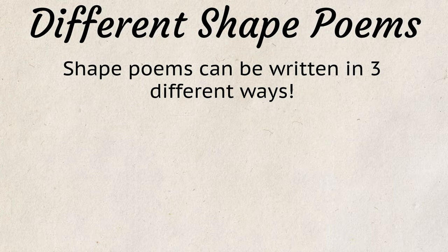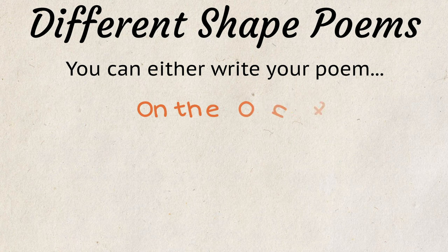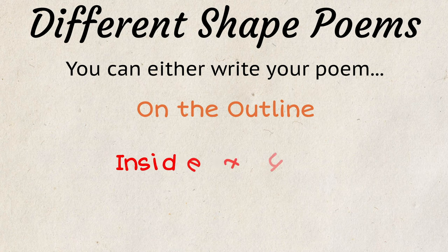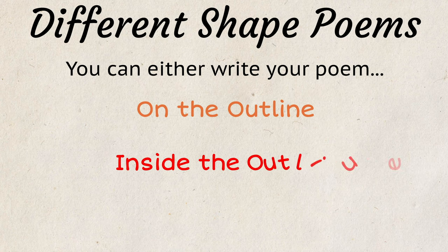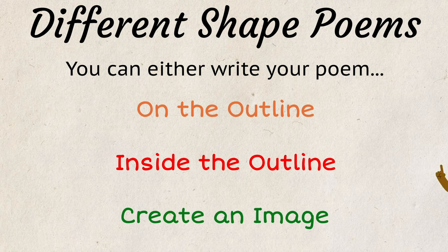Shape poems can be written in three different ways. You can either write your poem on the outline of your subject, inside the outline of your subject, or use the words of your poem to create an image.